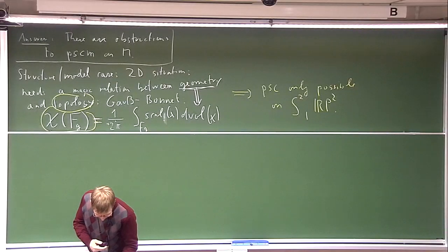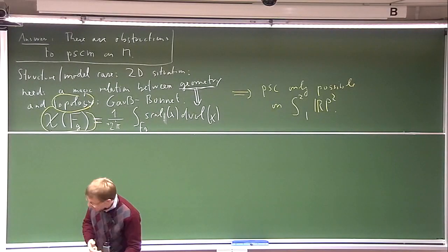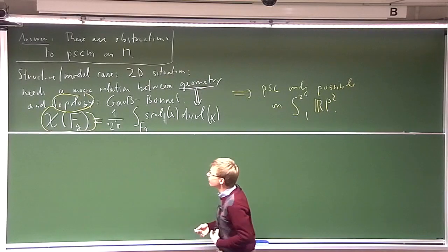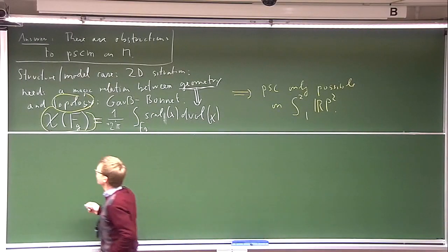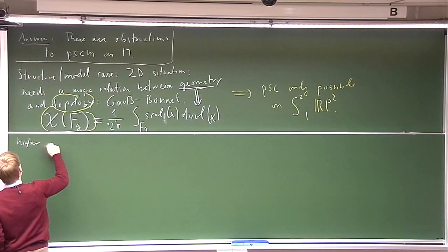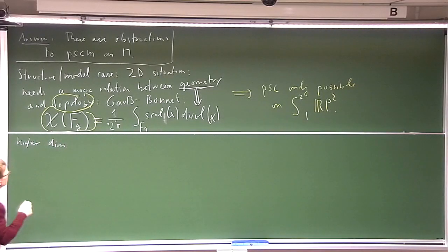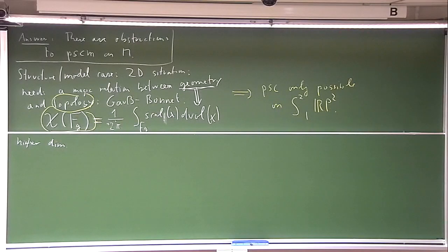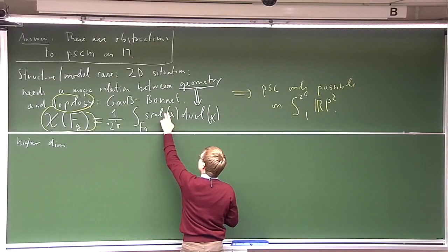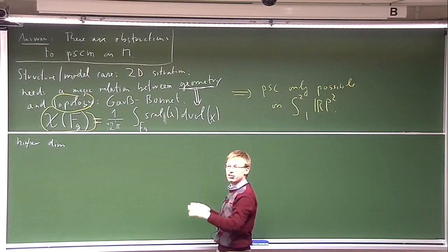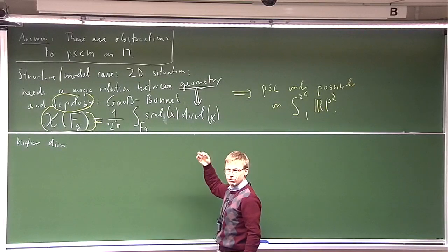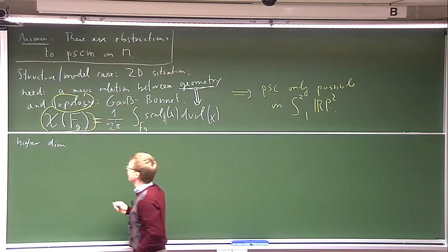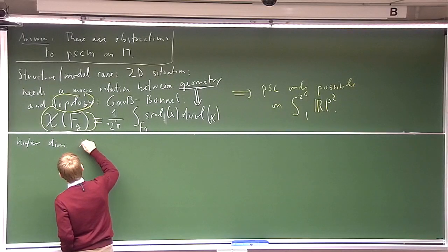If you want to go to higher dimensions, things are more complicated. One might hope to use the higher-dimensional Euler characteristic formula, which exists, but unfortunately that doesn't really work, because the curvature term in higher dimensions for the Euler characteristic depends on things other than the scalar curvature.